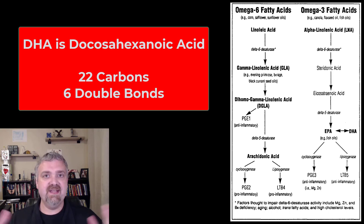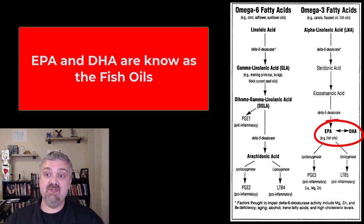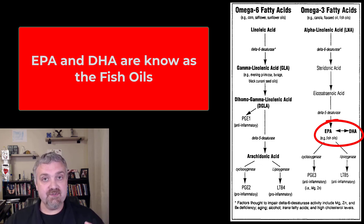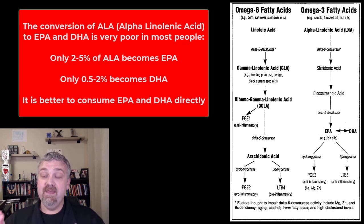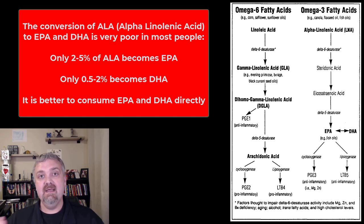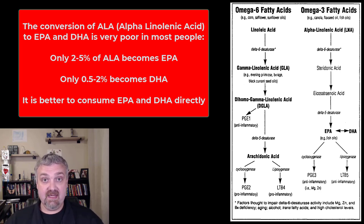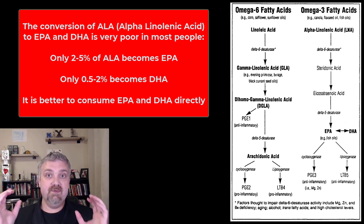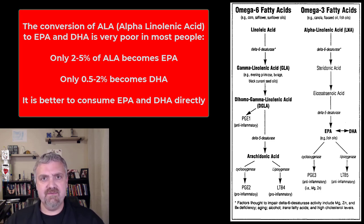EPA and DHA are down the chain from the essential fatty acid alpha-linolenic acid. Your body is supposed to produce these fish oils, but the conversion is pretty minimal. Most studies show that only 2–5% of alpha-linolenic acid (ALA) is actually converted to EPA, and only 0.5–2% is converted to DHA. So I tell people to consume EPA and DHA directly — consume fatty fish, take fish oil pills. If you're vegan, you can get DHA from algae sources. Yes, alpha-linolenic acid is the essential fat, but EPA and DHA is what we're after.